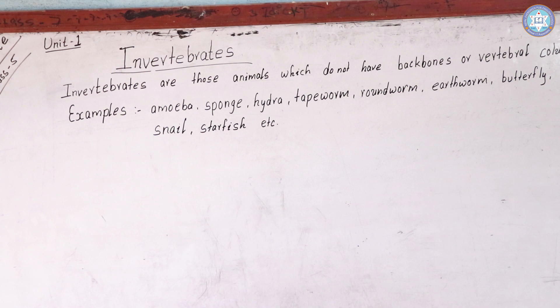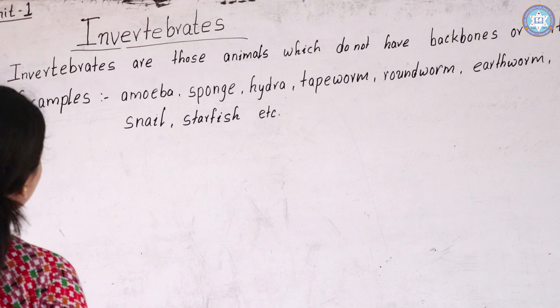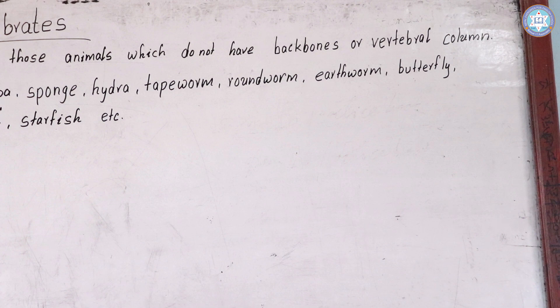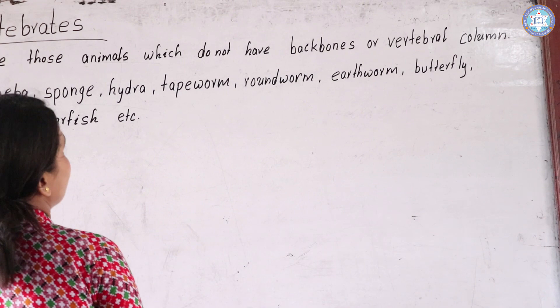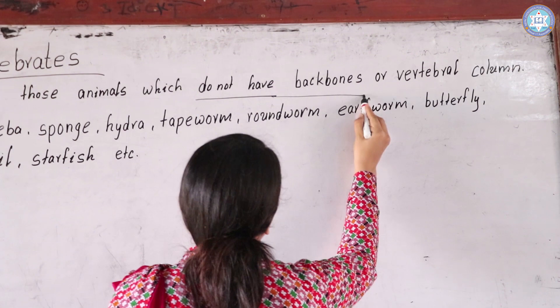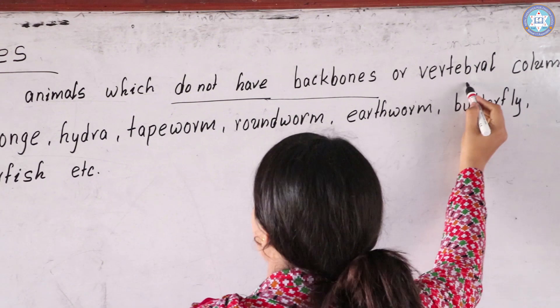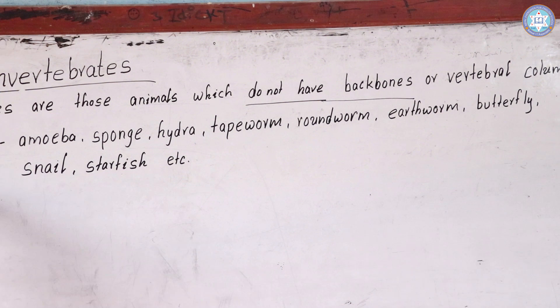We will start from the definition. Invertebrates are those animals which do not have a backbone or vertebral column. The absence of backbone is the main point. We must notice that invertebrates do not have backbones — that is also called the vertebral column.